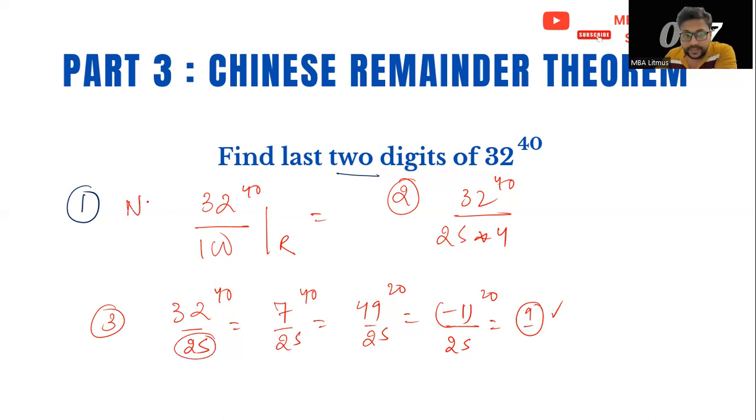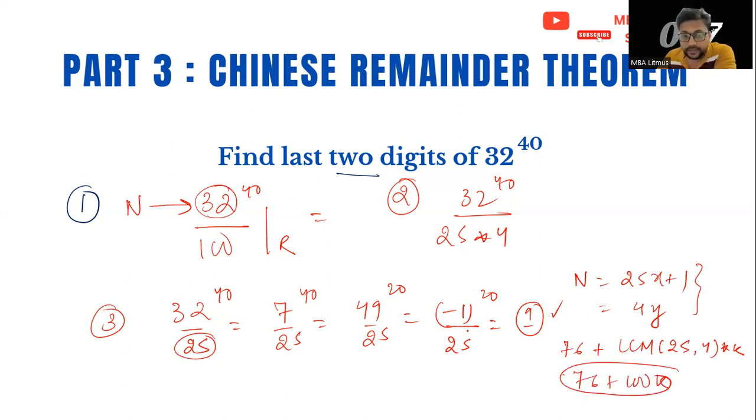Therefore, the remainder when divided by 25 is 1. So I can write this numerator as N. That number N can be given as 25X plus 1. If you look at this number, this number is divisible by 4 anyways, so I can write this as equal to 4Y. Again, the number satisfying both of these will be 76. So the general term will be 76 plus LCM of 25 comma 4 into K. So 76 plus 100K. If I divide this by 100, my remainder is going to be 76.